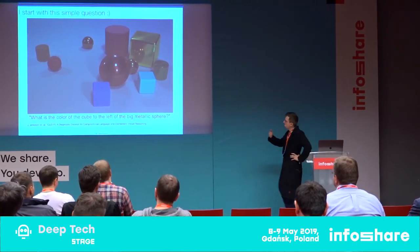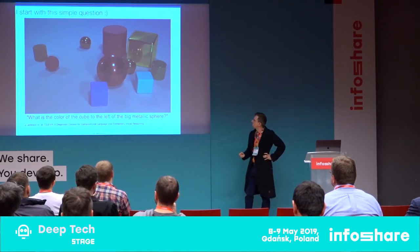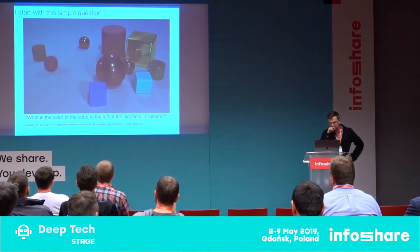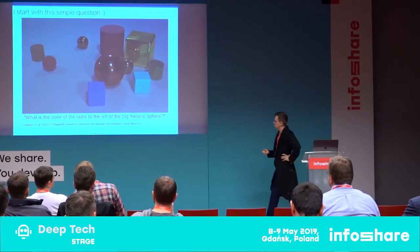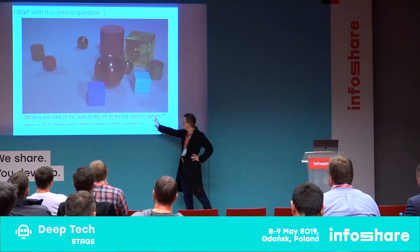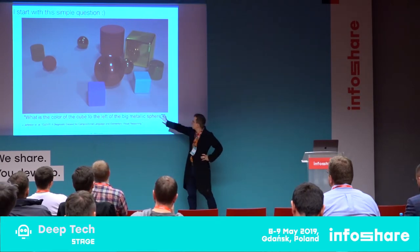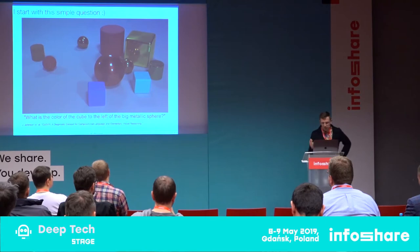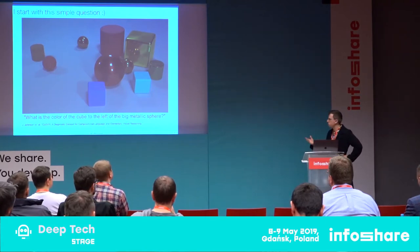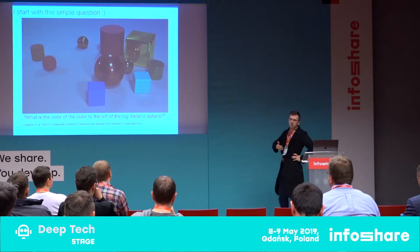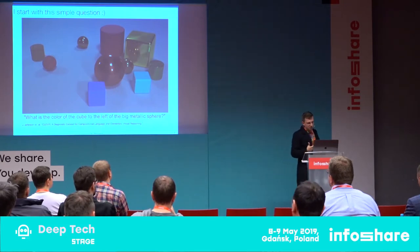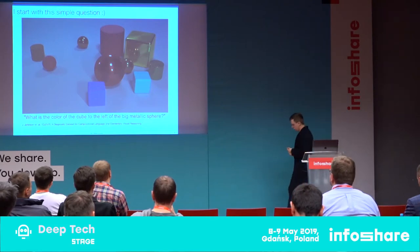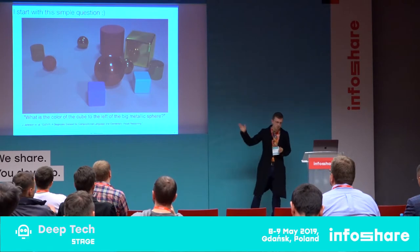We have to see the scene, analyze the scene, understand what the objects are, see the question, analyze the question, take different words from the question and associate them with different parts of the image. We have to understand what it means to be to the left, to the right, behind, and then do some reasoning process to derive the answer about this particular image.